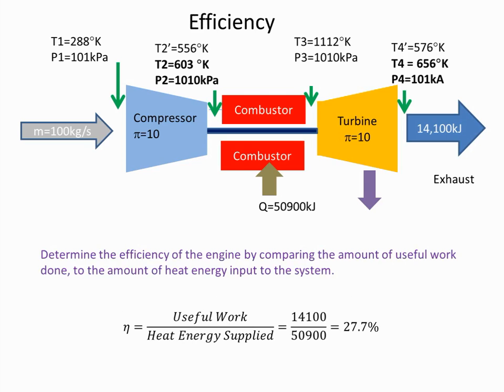If I look at the efficiency of the engine, well we got 14,100 kJ of useful work out. We supplied 50,900 kJ of fuel. So the overall efficiency is 27.7%. So you may recall in the earlier video it was 48.8%. When we had 100% efficiency of the compressor and turbine it is now dropped significantly just by dropping the efficiencies from 100 to 85%.